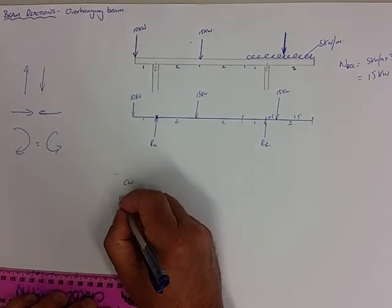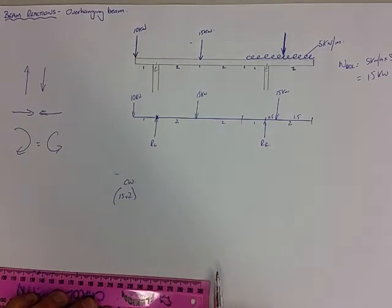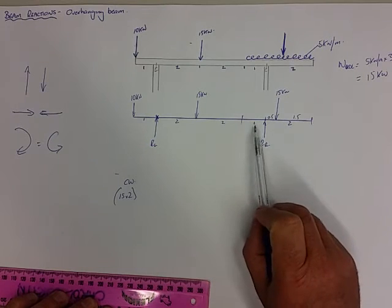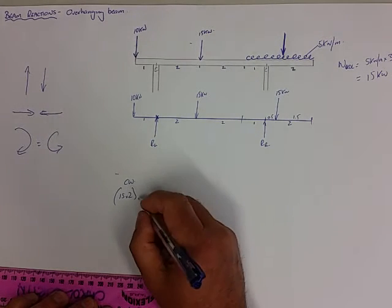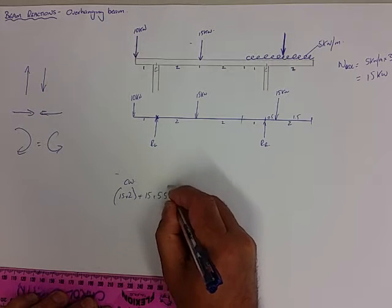So we have 15 times 2, which causes a clockwise moment. And we have 15 times 2, 4, 5, and 0.5. So it's plus 15 times 5.5.